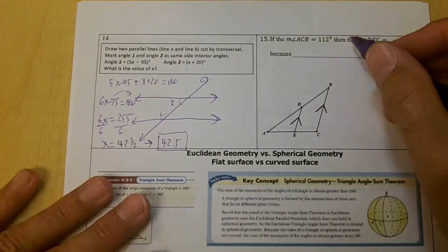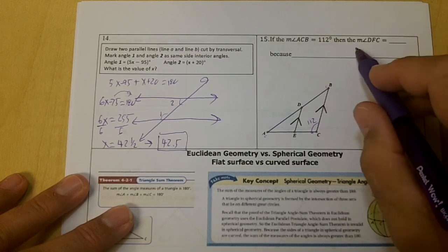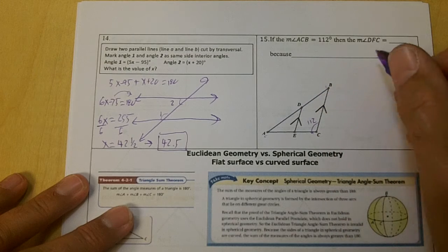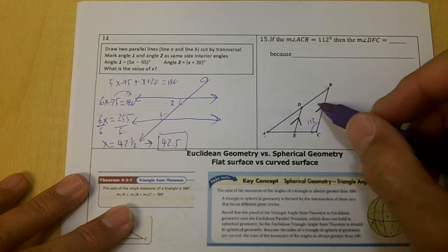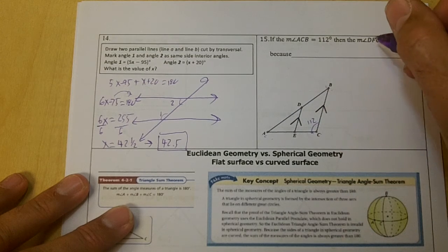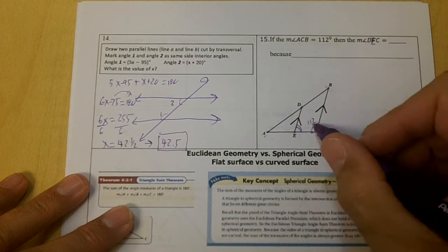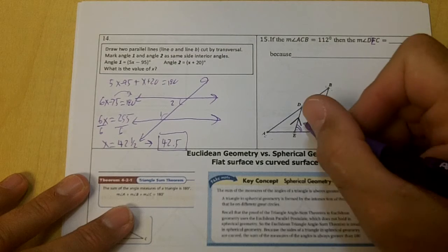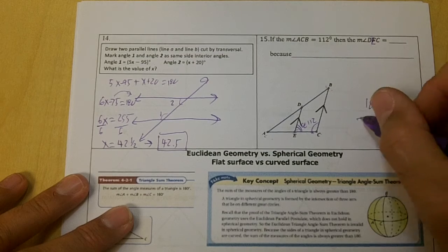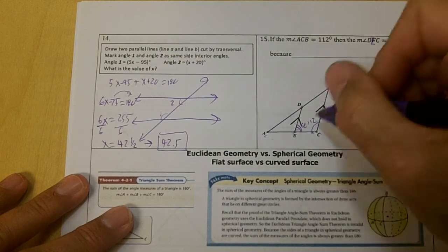Okay, if the measure of angle ACB is 112, then the measure of DEC. Let me make this DEC. DEC would be right here. These two are same side interior, so this would be 68 because they add up to 180, right? You would just do 180 minus 112 gets 68 because of same side interior.